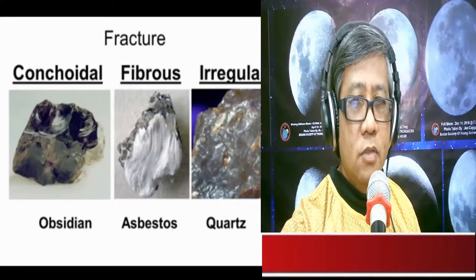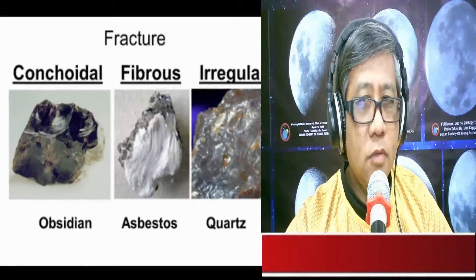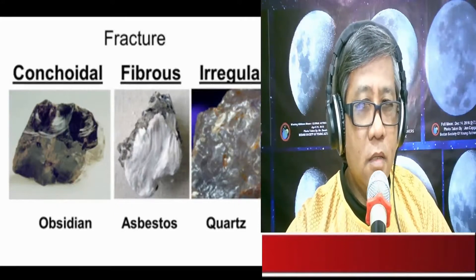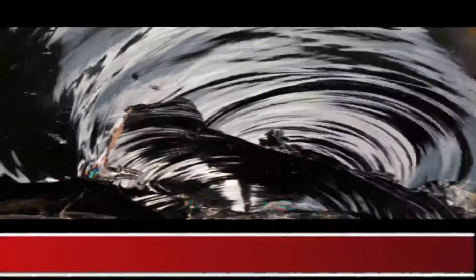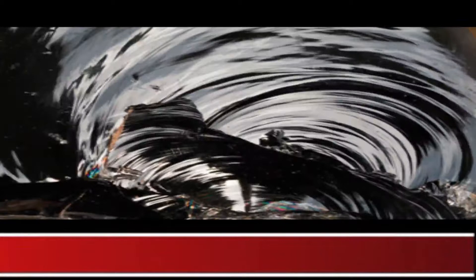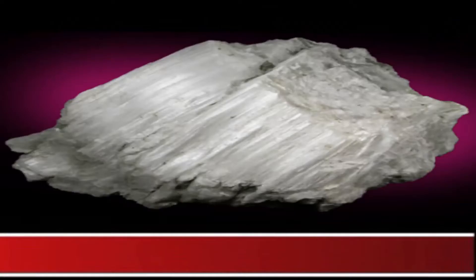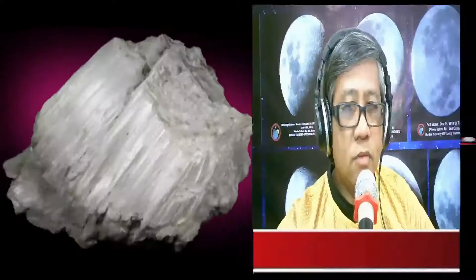Quartz exhibits an irregular fracture. Looking closely at obsidian, the fracture is curved and bowl-shaped — a conchoidal fracture. Asbestos shows fibers and splinters in its fracture surface, making it a fibrous fracture.